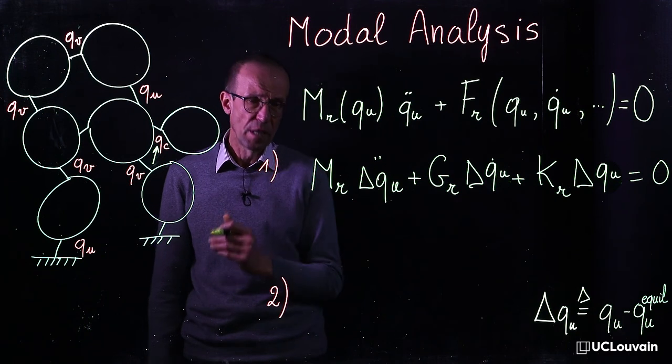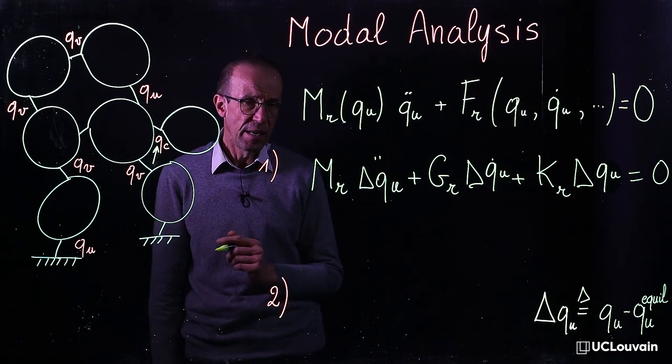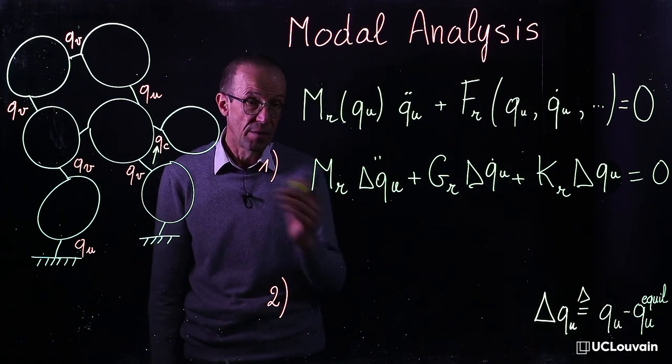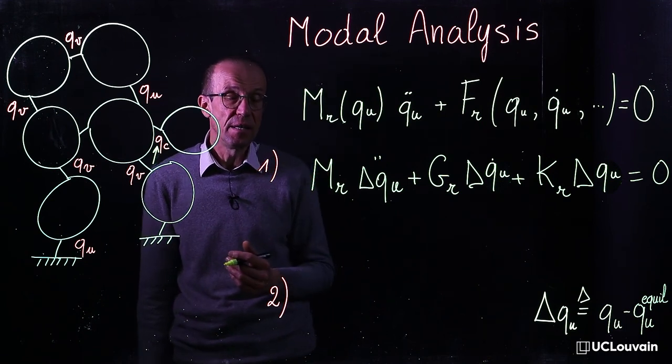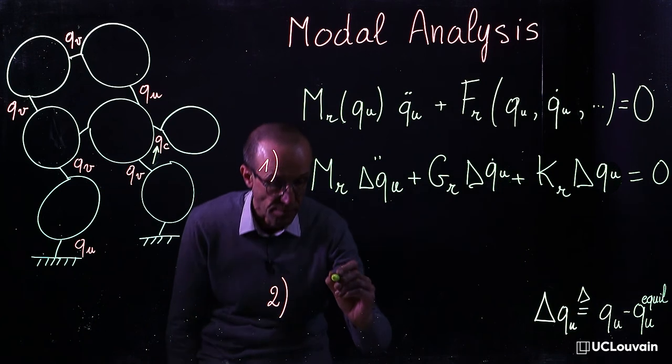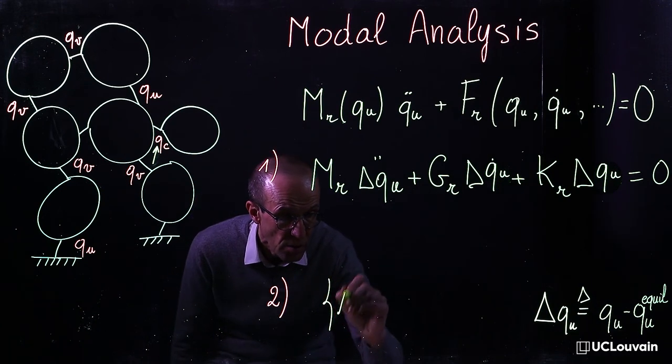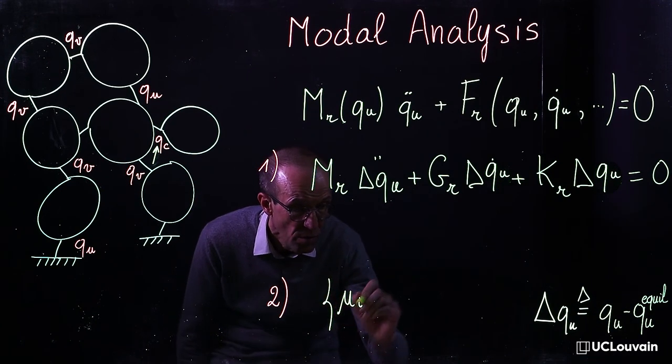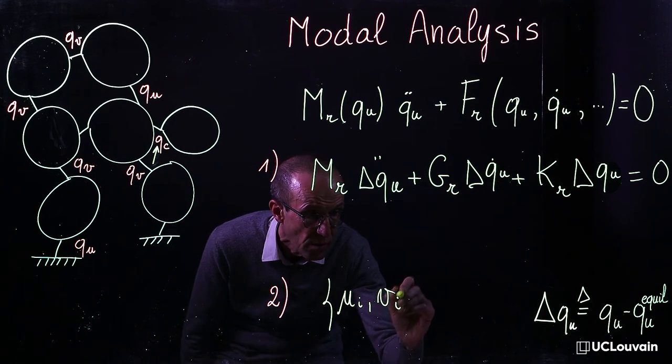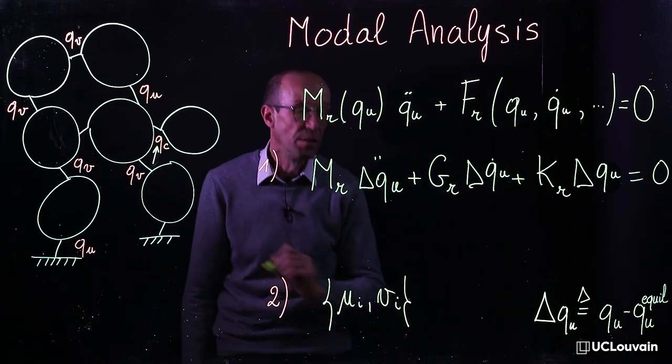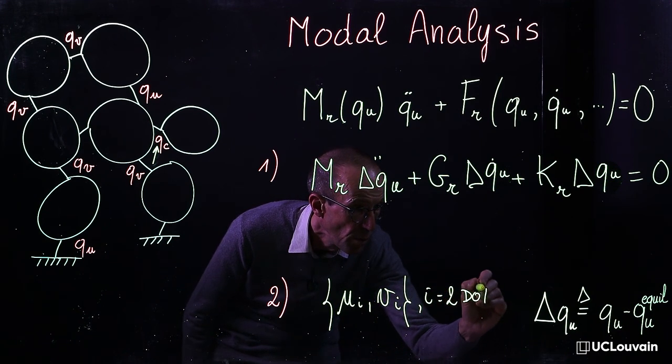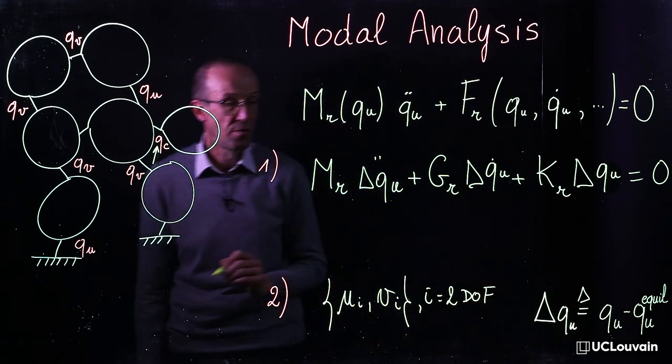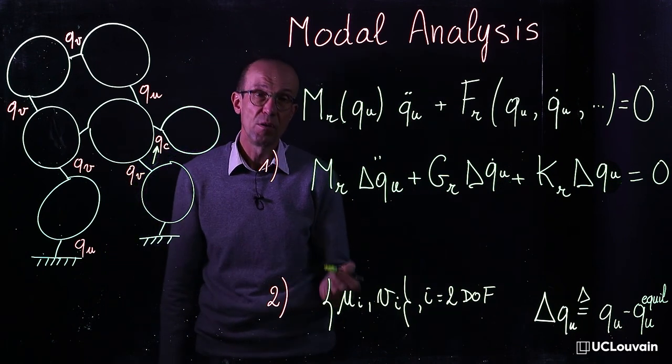The second step consists in finding the eigenmodes themselves via some advanced numerical technique. And the goal is to find the set of eigenvalues and eigenvectors of the system. And there are twice the number of degrees of freedom of eigenvectors and eigenvalues.